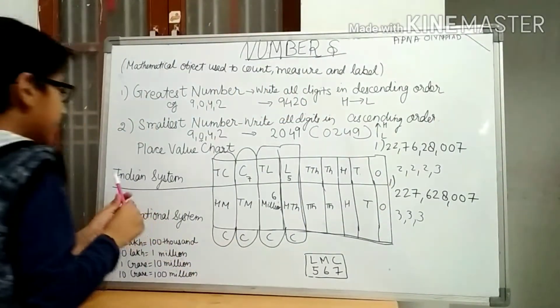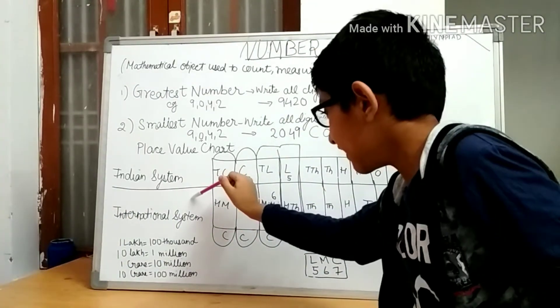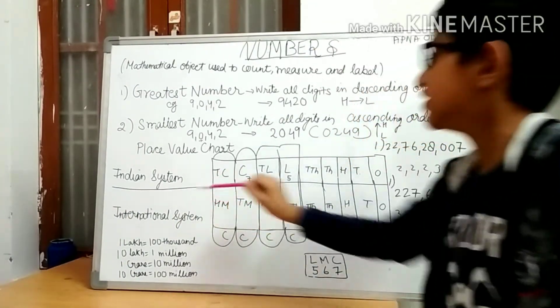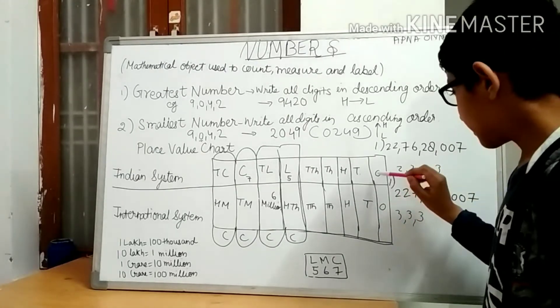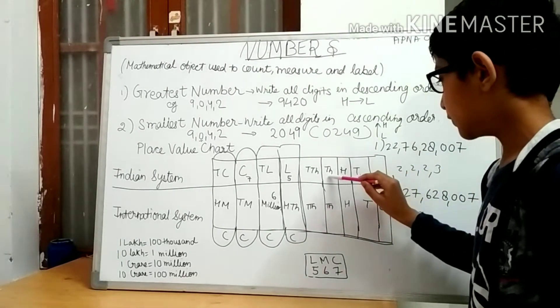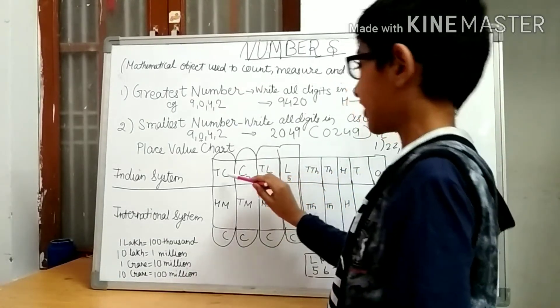Now we will learn place value chart of Indian system and international system. In Indian system we have: 1, 10, 100, 1000, 10,000, lakhs, 10 lakhs, crore, 10 crore.